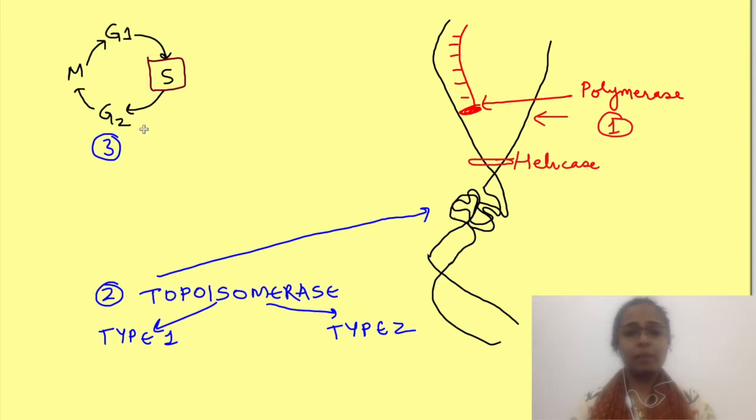Then finally the third requirement is that nucleotide substrate should be available for DNA synthesis. These include purines, that is adenine and guanine, and pyrimidines, that is cytosine and thymidine. So there are drugs which act here and here.